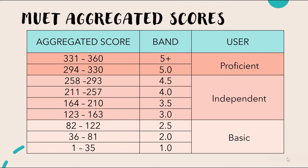A total score of 1 to 35 marks gives Band 1.0. Marks between 36 and 81 give Band 2.0, and 82 to 122 marks give Band 2.5. Bands 1.0, 2.0 and 2.5 categorize candidates as Basic Users of English. You do not want to be at this level, as you will most likely face difficulties entering certain courses in university. However, some courses will admit you with these bands, but you will be required to re-sit MUET during your studies to get a minimum of Band 3.0 to graduate.